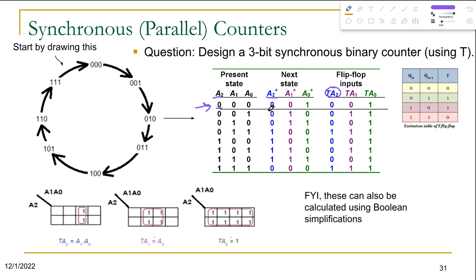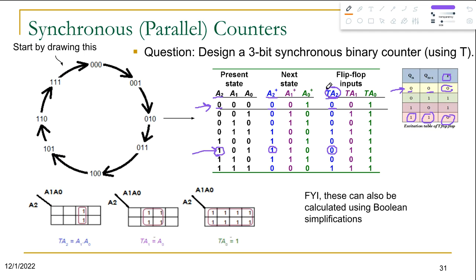For example, calculating TA2: if the present state is 0 and the next state is 0, we look up the excitation table — when present state is 0 and next state is 0, the flip-flop input is 0. For another example, if present state is 1 and next state is 1, the flip-flop input is also 0. By following this rule we complete the entire TA2 column, then do the same for TA1 and TA0.